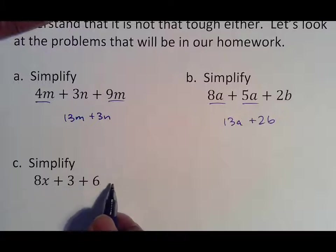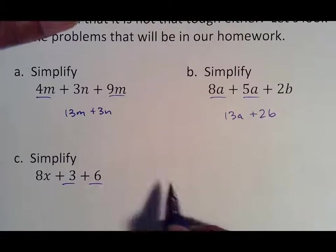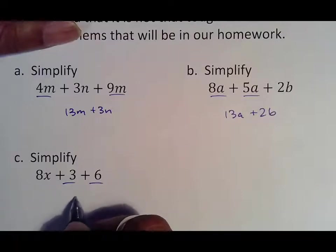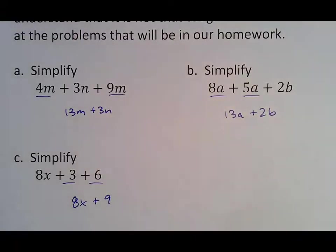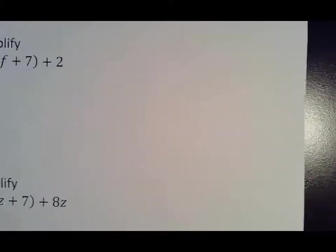8x plus 3 plus 6. What I notice here is that both of these are regular whole numbers, which means I can put them together, which means 8x stays 8x, but 3 and 6 turns into 9, and that is all you're really doing. So that is the key idea for your process. Just make sure that you are ready for that when it comes up, and you should be okay.